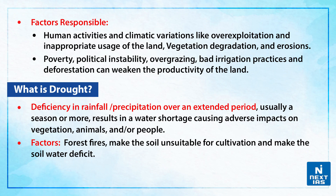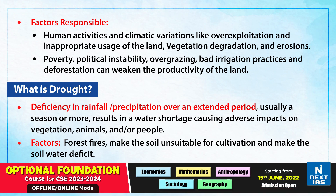What is drought? It is known as the deficiency in rainfall or precipitation over an extended period of time — usually a season or more — resulting in water shortage that causes adverse impact on vegetation, animals, or people.